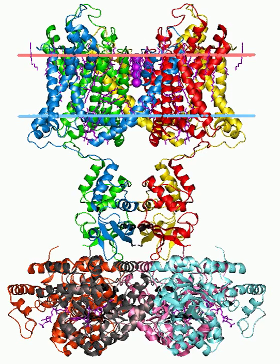Voltage-gated K+ channels are selective for K+ over other cations such as Na+. There is a selectivity filter at the narrowest part of the transmembrane pore. Channel mutation studies have revealed the parts of the subunits essential for ion selectivity, including the amino acid sequence THR-VAL-GLY-PHE-GLY, typical of the selectivity filter of voltage-gated K+ channels. As K+ passes through the pore, interactions between potassium ions and water molecules are replaced by interactions with specific atomic components of this sequence from the four channel subunits.